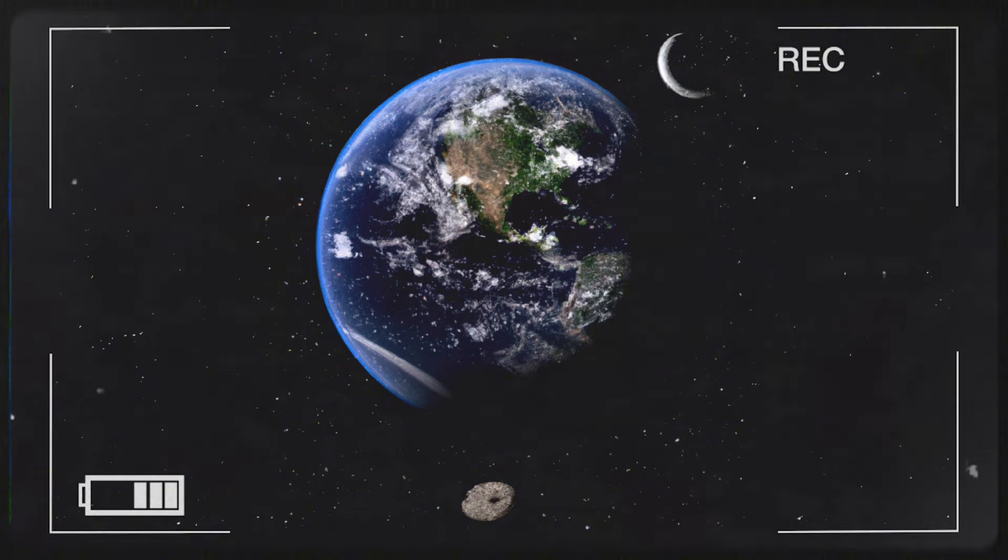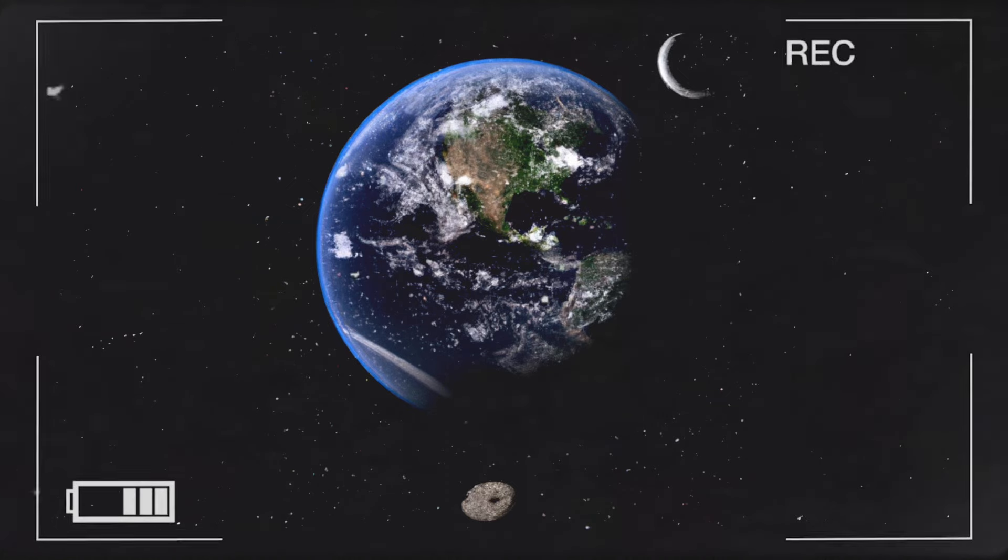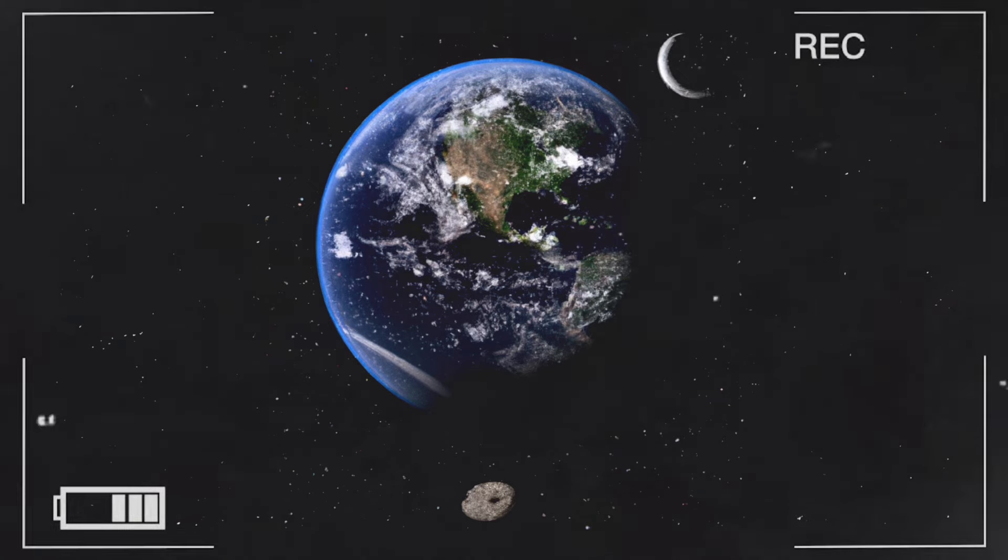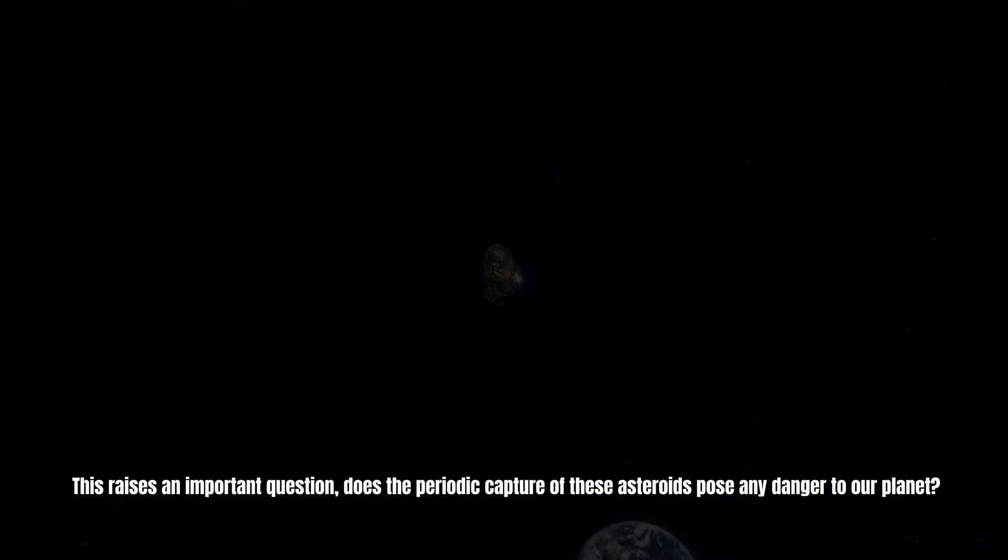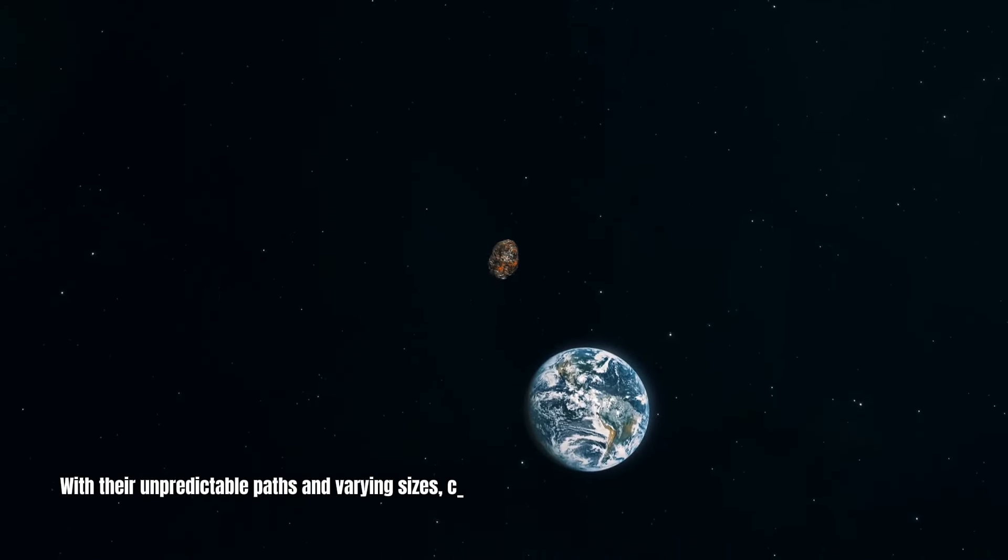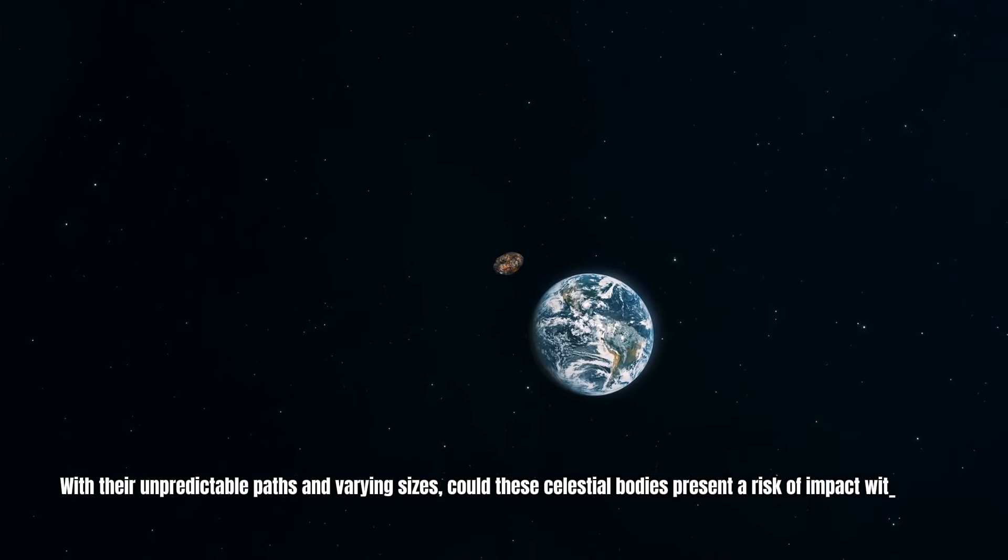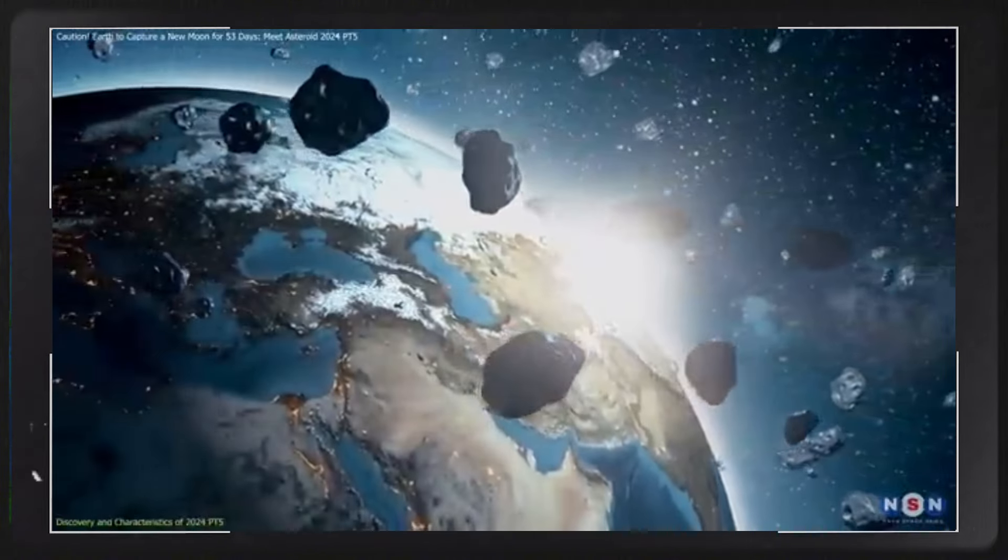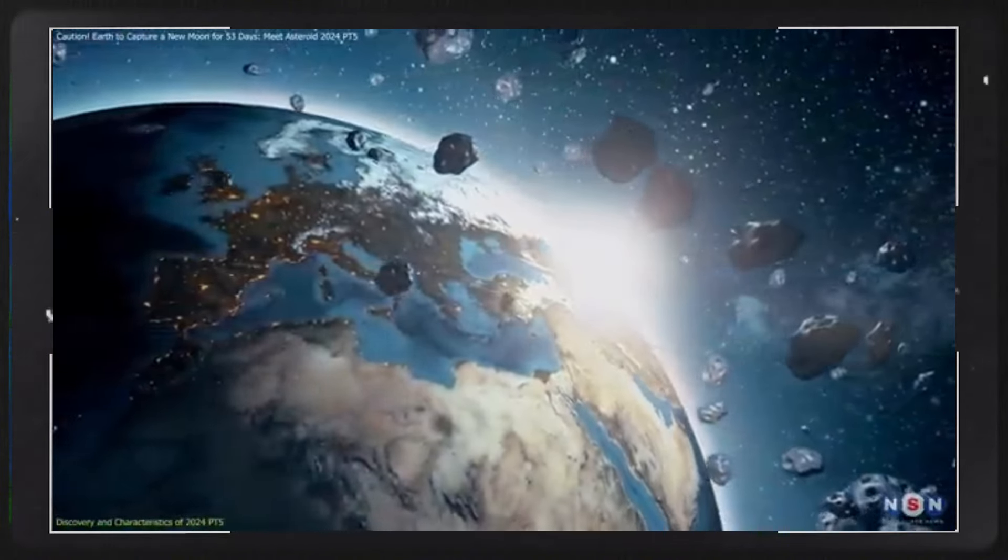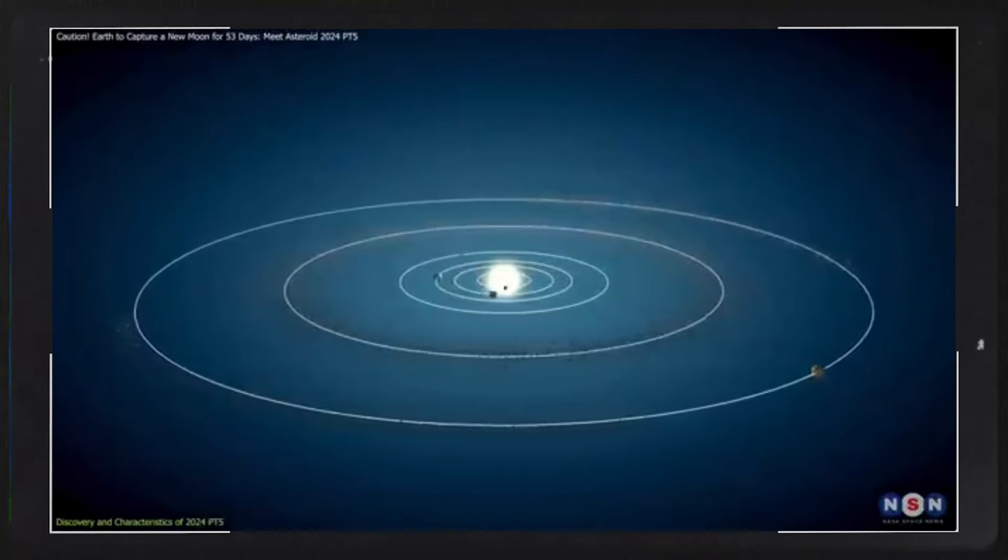These mini-moons generally follow a predictable pattern, orbiting Earth approximately 2.9 times before ultimately escaping its gravitational pull, usually after about nine months. However, researchers discovered that some mini-moons have the capability to remain in Earth's orbit for much longer periods, sometimes extending into decades. This raises an important question: Does the periodic capture of these asteroids pose any danger to our planet? With their unpredictable paths and varying sizes, do these celestial bodies present a risk of impact with Earth? According to experts, such scenarios involving mini-moons are considered extremely rare. In fact, only about 0.1% of the objects that have collided with Earth are believed to have previously served as mini-moons.